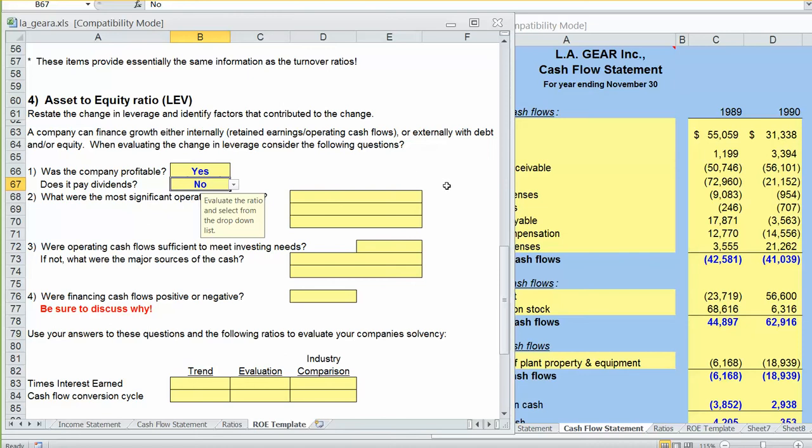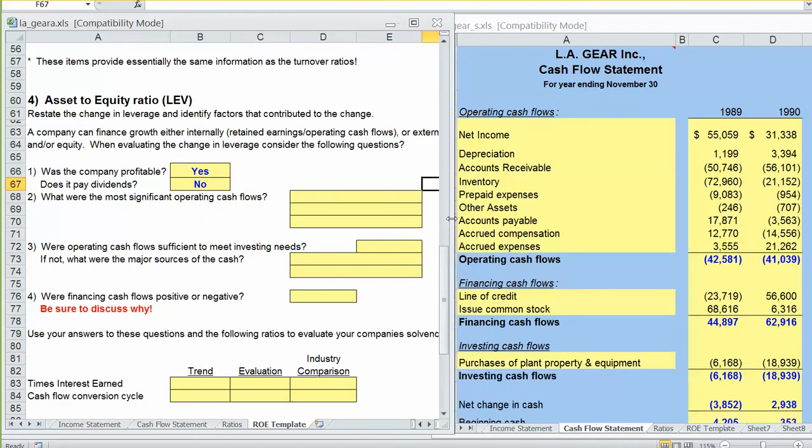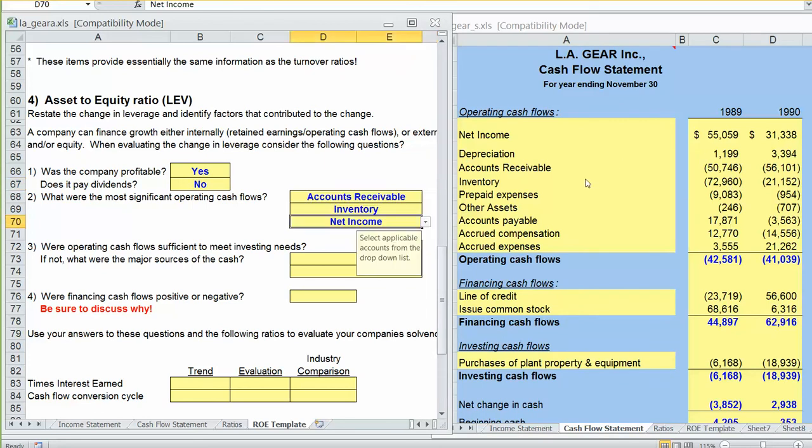Let's go ahead and also look at our cash flow statement and try to answer these questions. What were the most significant operating cash flows? The most significant operating cash flows were these three biggest items here. We had accounts receivable, we had inventory, and then the other large item is net income. So notice the receivables and inventory assets went up. That was a use or a decrease of operating cash flows. Were operating cash flows sufficient to meet investing needs? Operating cash flows are negative. So clearly there's no way in the world they can cover our investing needs.